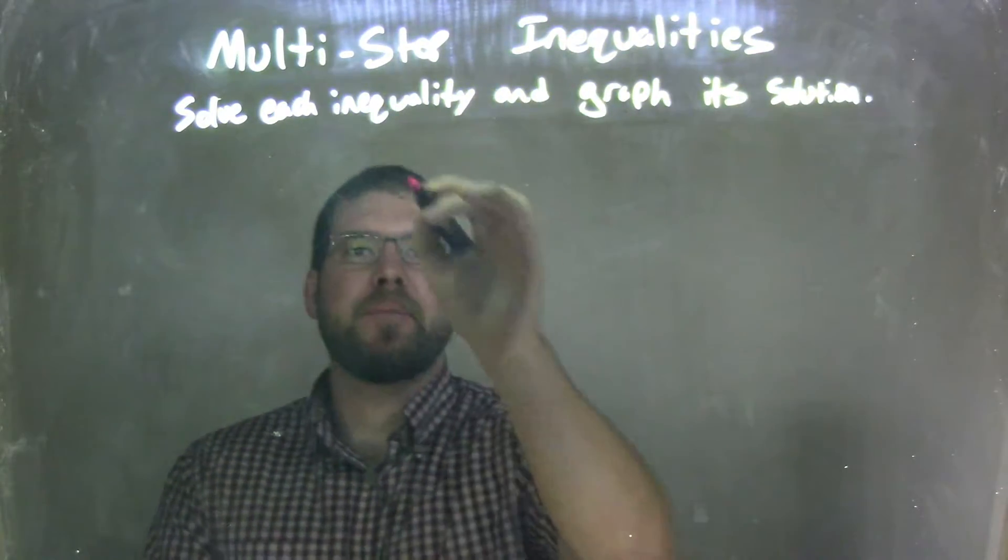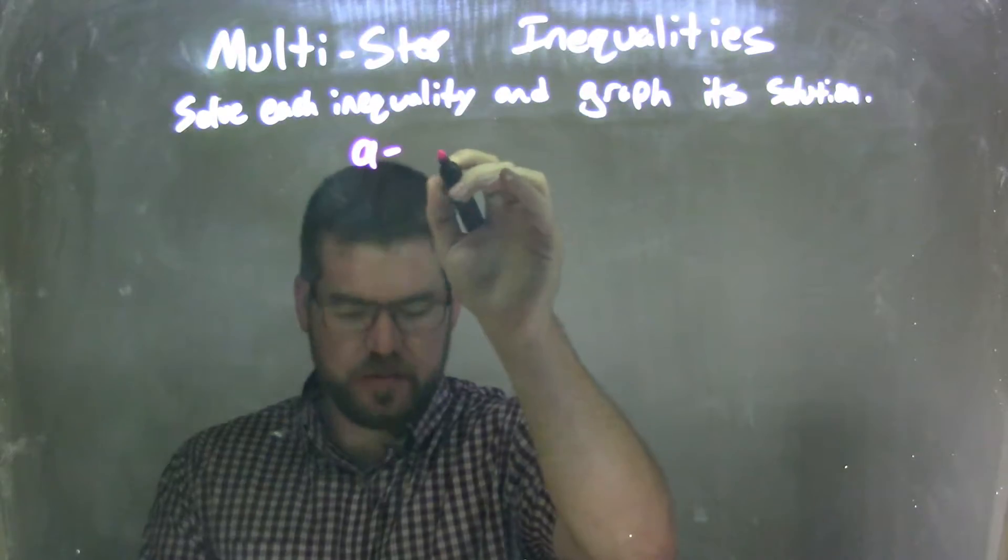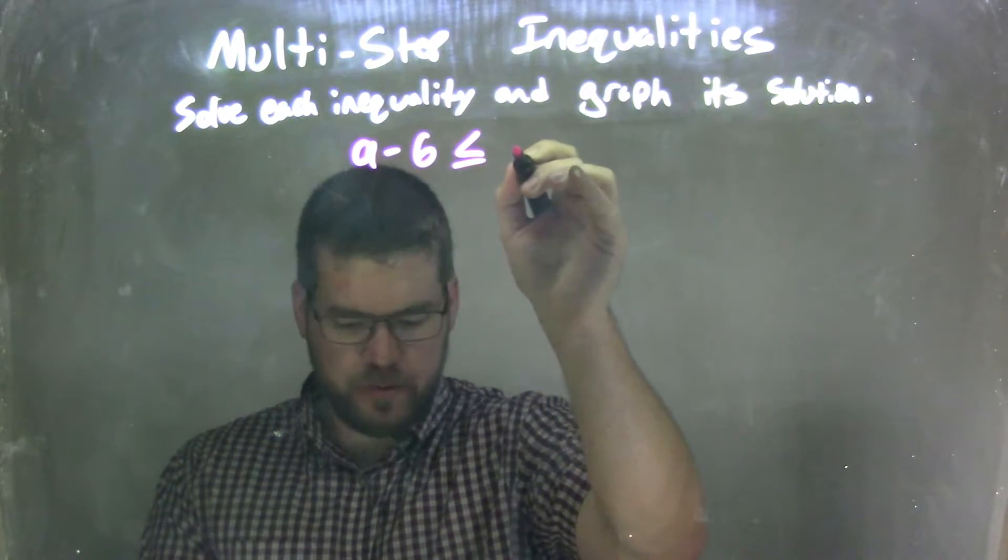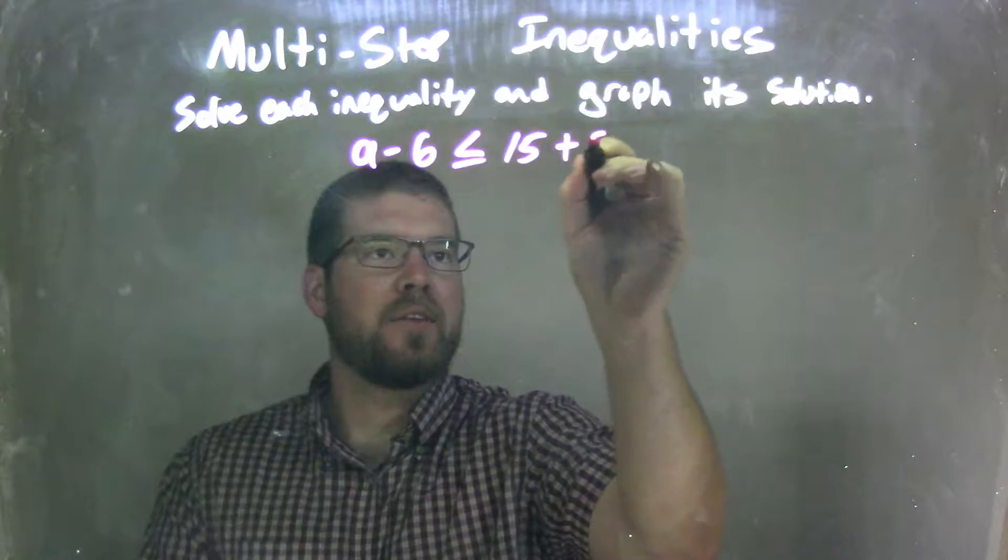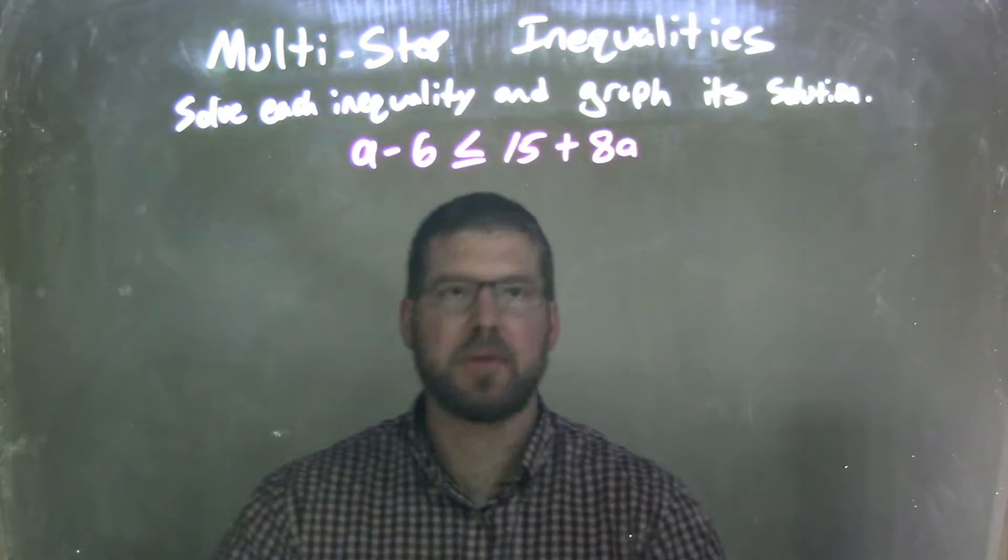So if I was given this inequality, a minus 6 is less than or equal to 15 plus 8a. Well, what I'm going to do here is I'm going to combine my like terms.